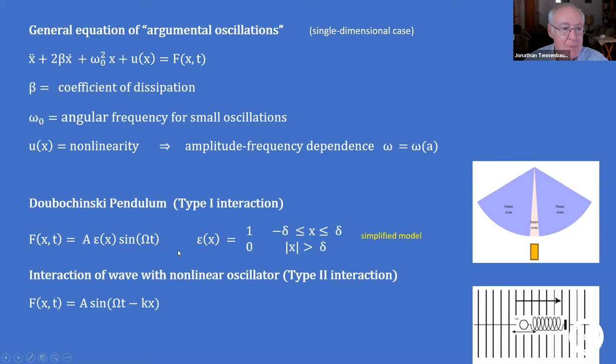In the Doubochinsky pendulum, this is now a very simplified simplification. You have here your feeding, your field, sinusoidal function. Big omega is the frequency, say 50 hertz or maybe a thousand hertz, and this epsilon of x is a step function, which is zero outside a very narrow range, and one inside. So what you have is you have this signal sign of omega t inside, or the force inside this so-called interaction zone, and zero outside. Outside the pendulum is free to oscillate, to do its own thing.